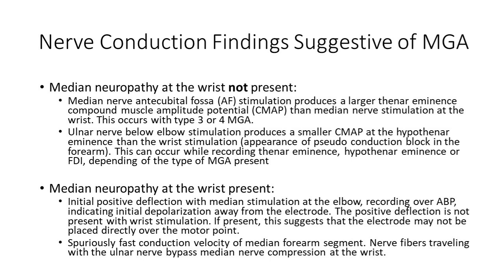Nerve conduction findings may appear differently depending on whether or not the patient also has a median neuropathy at the wrist. In a normal patient who does not have a median neuropathy, when recording at the abductor pollicis brevis and stimulating the median nerve at the wrist and antecubital fossa, you may find a larger compound muscle amplitude with the proximal stimulation at the elbow than at the wrist. When studying the ulnar nerve and recording at the abductor digiti minimi in the hypothenar eminence, the wrist stimulation may produce a larger amplitude than when stimulating the ulnar nerve below the elbow. This is due to the crossover and contribution of the median nerve fibers that were not present at the below elbow site and are now present at the wrist site.